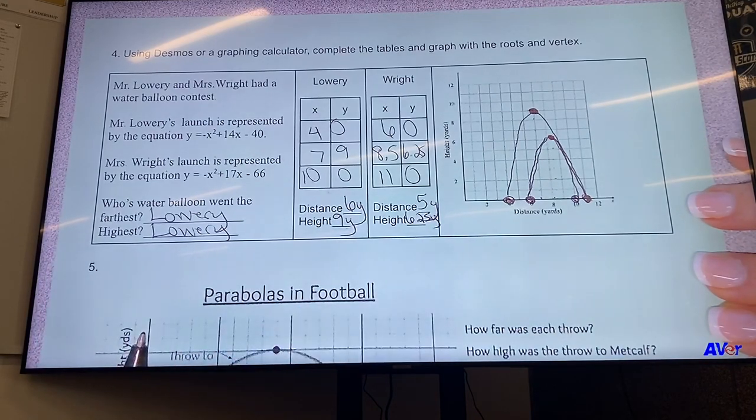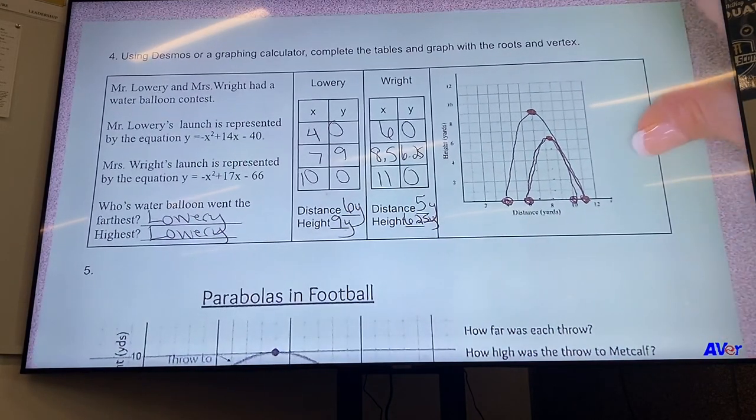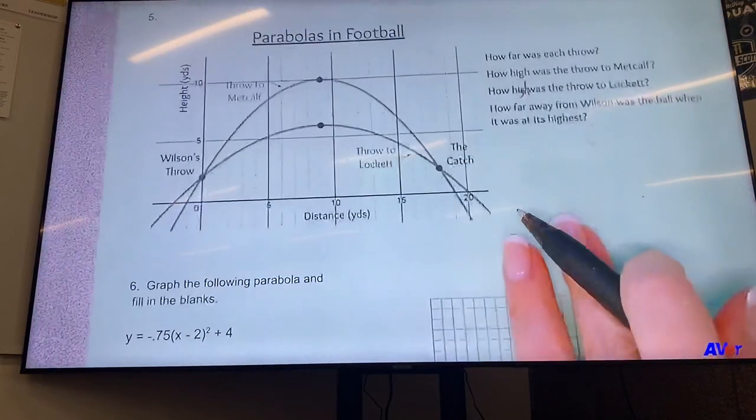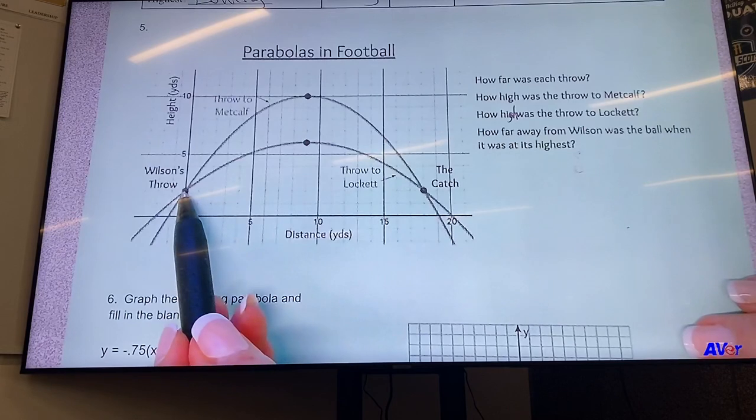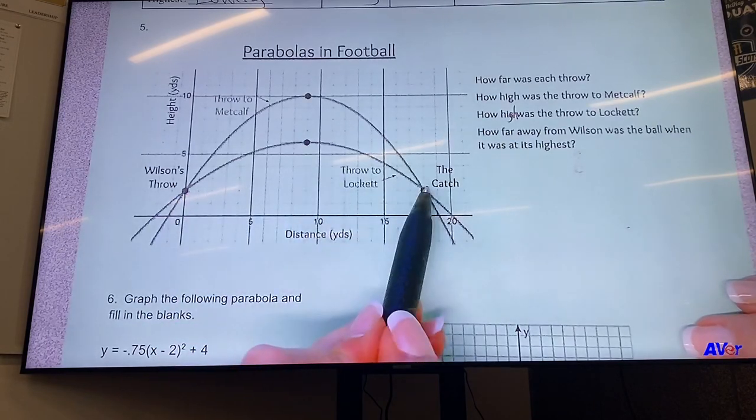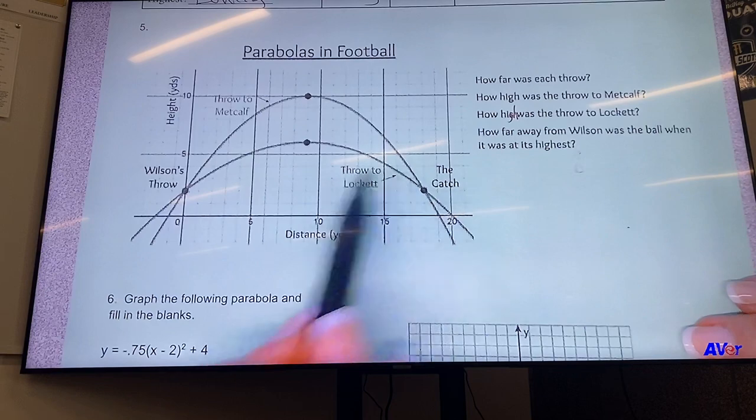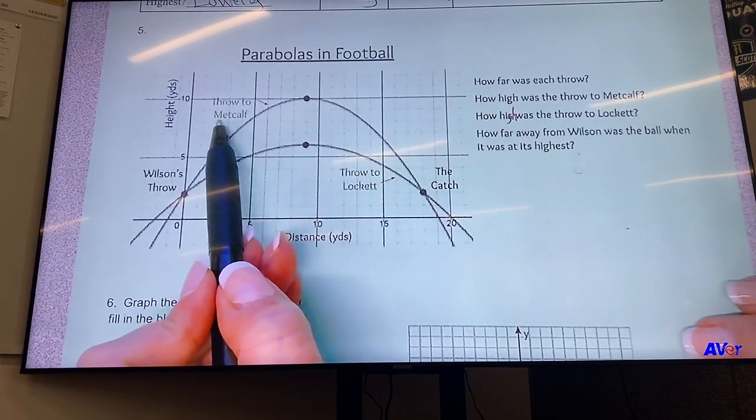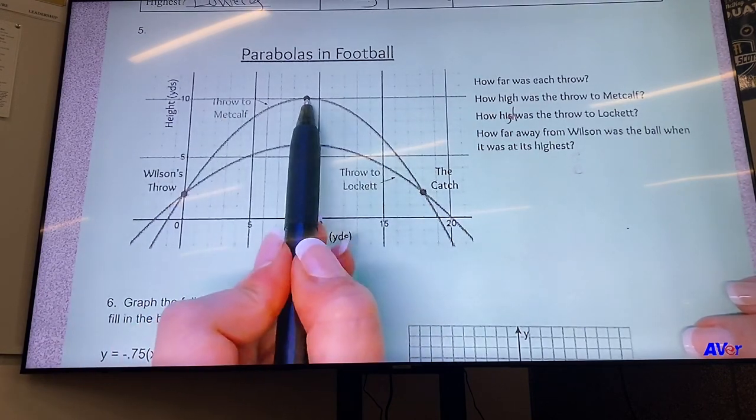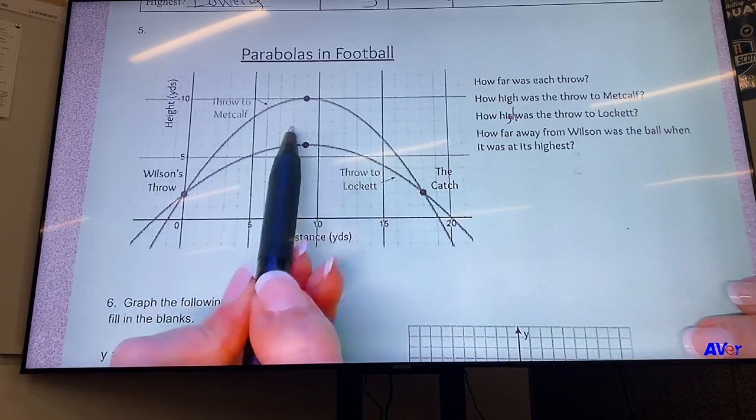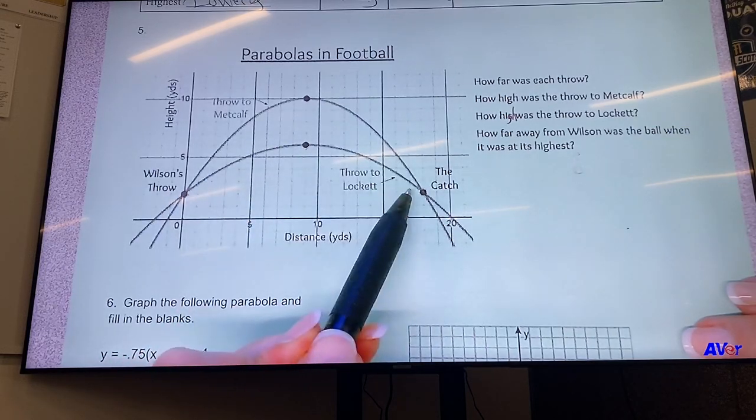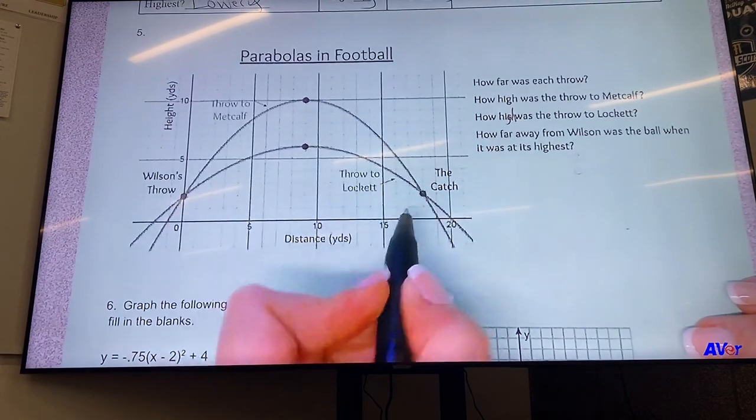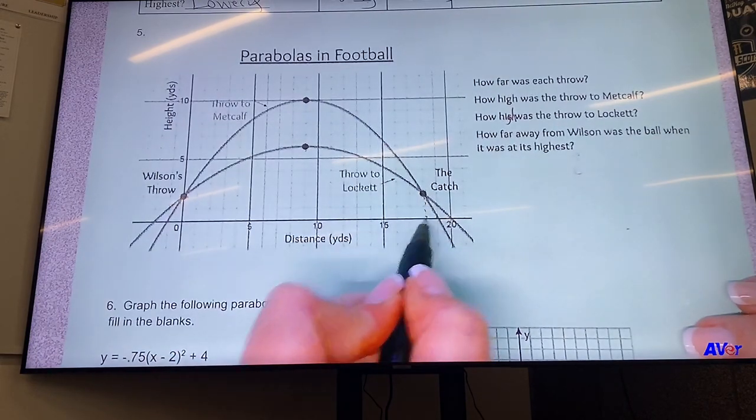All right, so then parabolas in football. So how far was each throw? They were thrown from the same spot and caught at the same spot. The difference is Metcalf's was higher than Lockett's. Lockett's was lower, but they started and stopped at the same place.